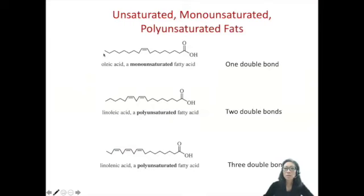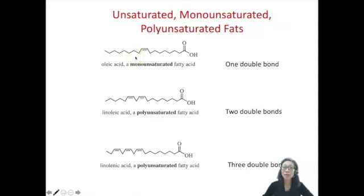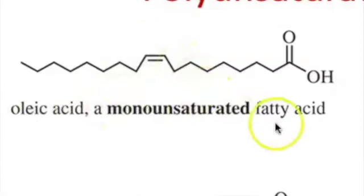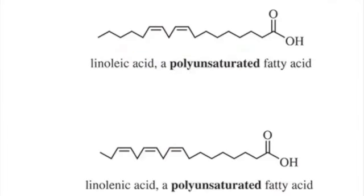Unsaturated means that they're not saturated with hydrogens due to one, two, three or more double bonds. Every time you add a double bond, there will be less than the maximum number of hydrogens, so it is no longer saturated with hydrogens. A monounsaturated fatty acid has one double bond, and polyunsaturated can have more than one — either two or three double bonds.